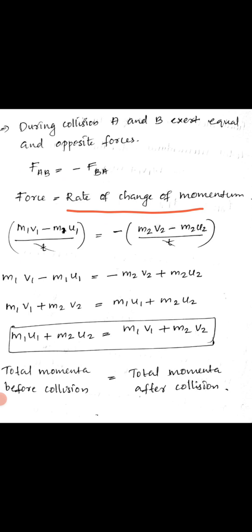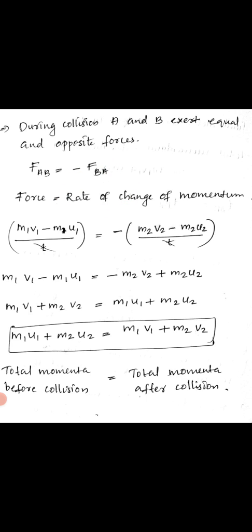For body M1, the rate of change of momentum is final momentum minus initial momentum divided by time: M1V1 minus M1U1 divided by T. For body M2, the rate of change of momentum is M2V2 minus M2U2 divided by T.